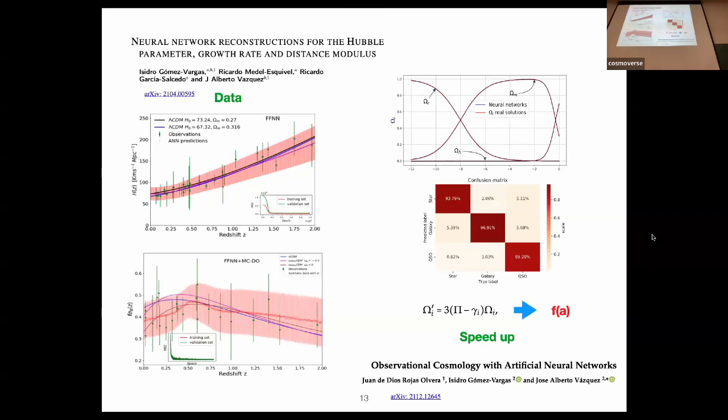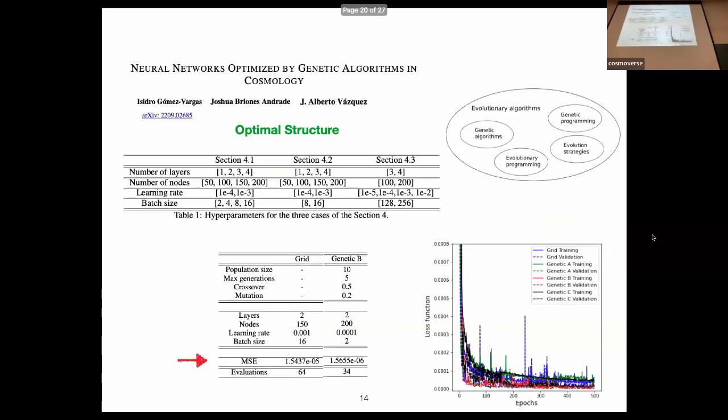Nowadays, using machine learning techniques, we're able to produce reconstructions of several functions. We can reconstruct the functional form of the data, or use artificial neural networks to speed up calculations. One big problem is the selection of the architecture of the network. There are many permutations to take into account. If we take a grid with all possibilities of layers, nodes, weights, batch size, and activation functions, we need to compute all these possibilities.